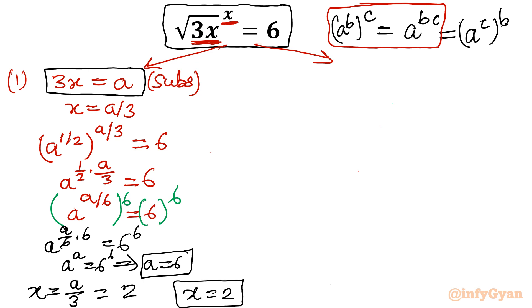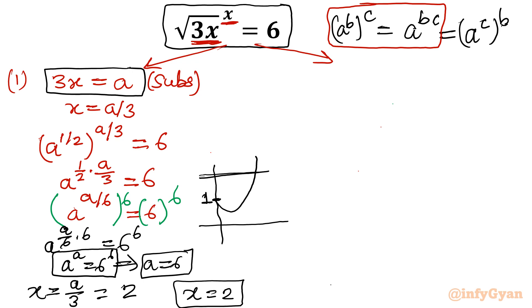One more conclusion from a to the power a equals 6 to the power 6: as we know from the graph, at x equal to 0 the limit of this function is 1, while the right-hand side is the constant 6 to the power 6. Since the left-hand function attains a minimum and then increases throughout, there is only a single intersection point, confirming x equals 2 is the unique solution.